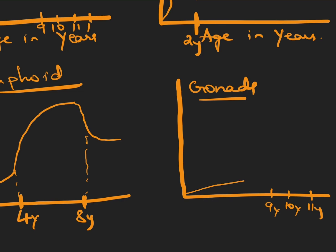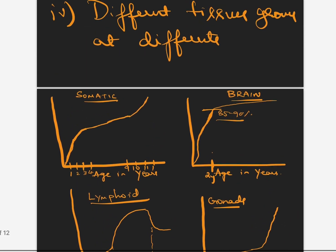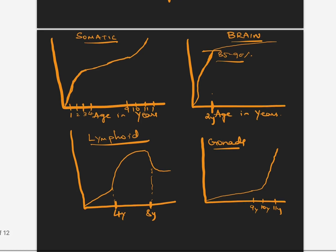Gonadal growth is almost plateaued from birth until puberty, then suddenly during puberty the gonadal organs grow rapidly to reach adult size. In summary: somatic growth peaks in the first two to three years and again at puberty; brain growth is rapid in the first two years reaching 85-90%; lymphoid peaks at four to eight years; and gonads grow markedly during puberty.